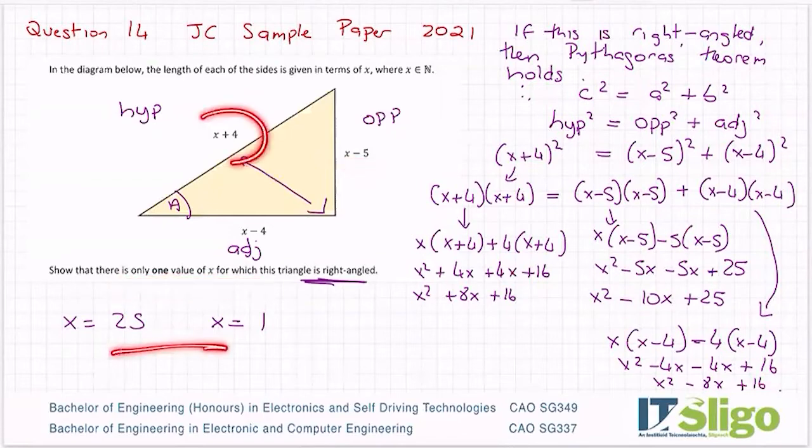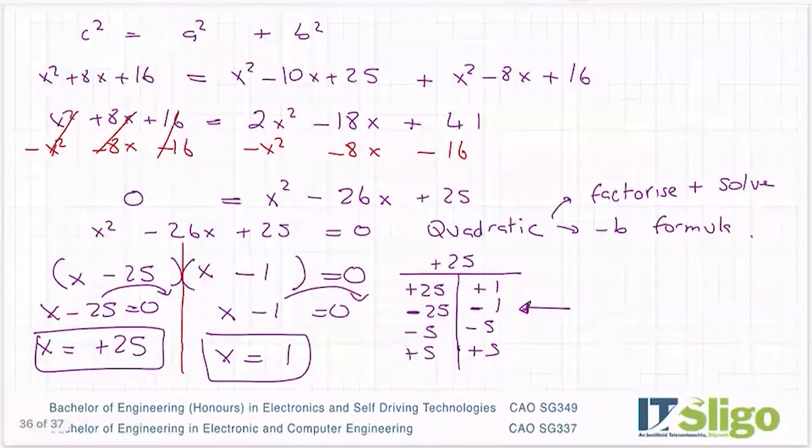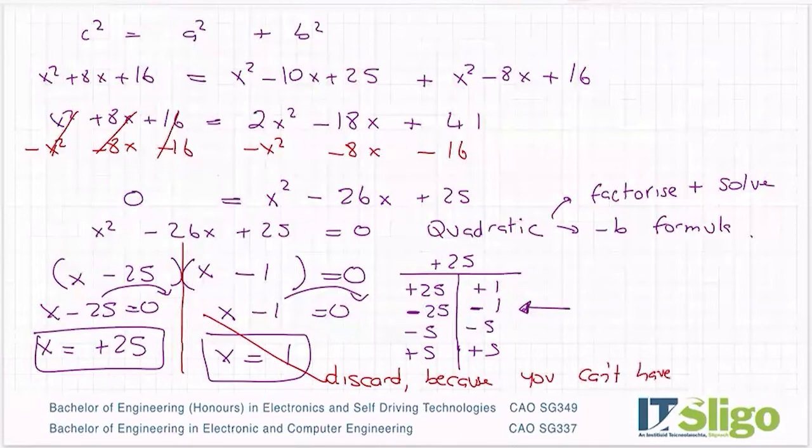Both of these values would work here because whether that's 25 and 4, 29, or whether that's a length of 5, it doesn't really matter. But it's not 1 because you can't have negative sides. So what you do is you put a line through this one. You're going to discard or throw away this one because you can't have negative lengths of sides. So your answer is x = 25.